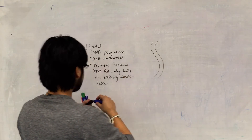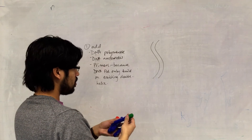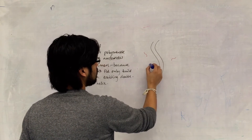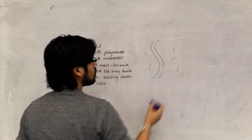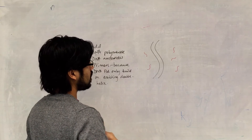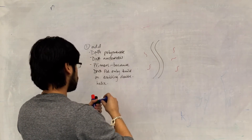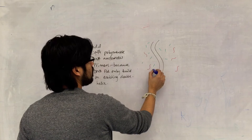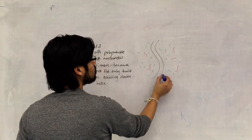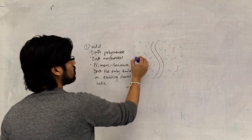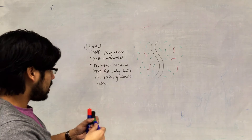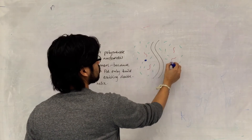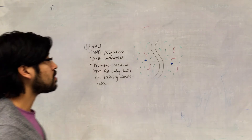Let's add our mixture components. Our primers will be shown in red, our new DNA strands will be in green, and the free nucleotides are around and available for polymerase to use. We'll show polymerase as a blue ball — this is the DNA polymerase enzyme.